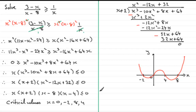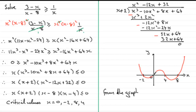We're looking for where the graph is less than or equal to 0 — in other words, below the x-axis. From the graph, this occurs for x between minus 2 and 0, and for x between 4 and 8.